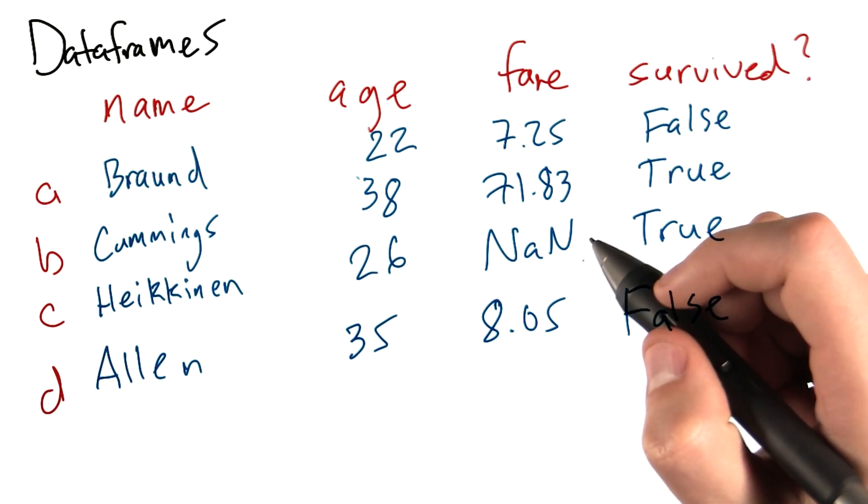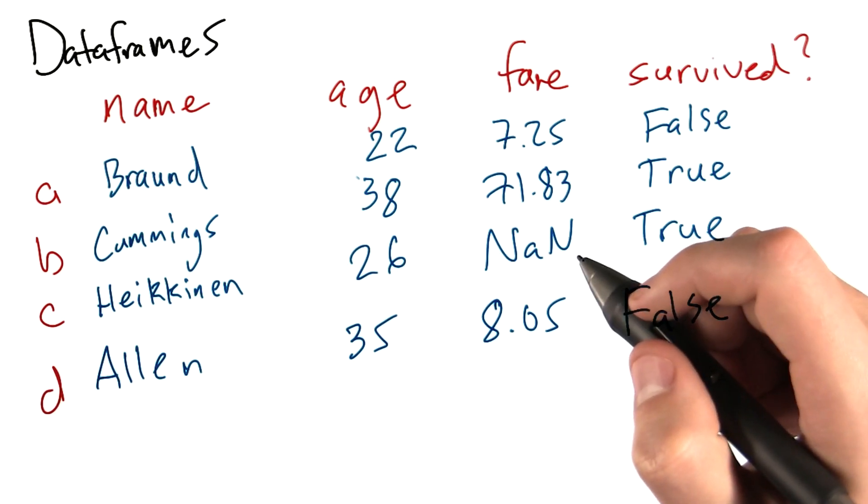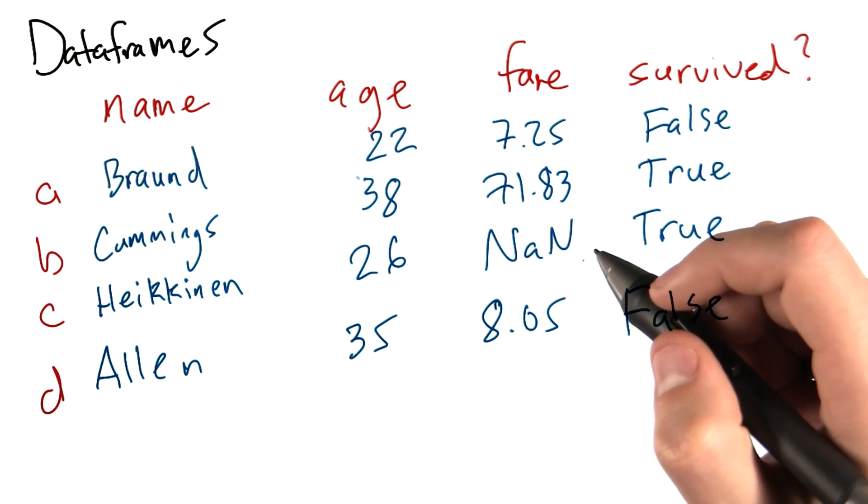First of all, data in pandas is often contained in a structure called a data frame. A data frame is a two-dimensional labeled data structure.